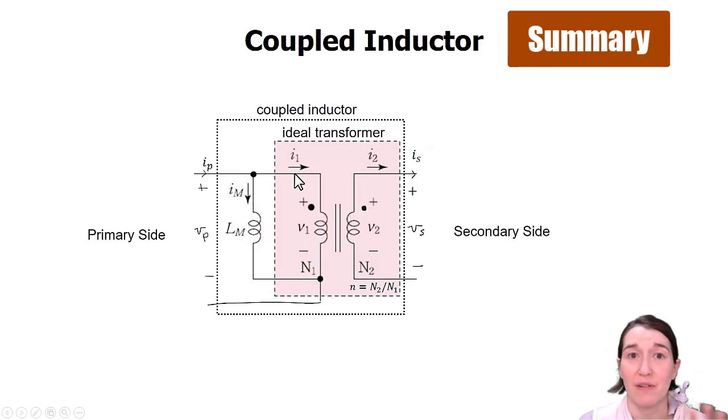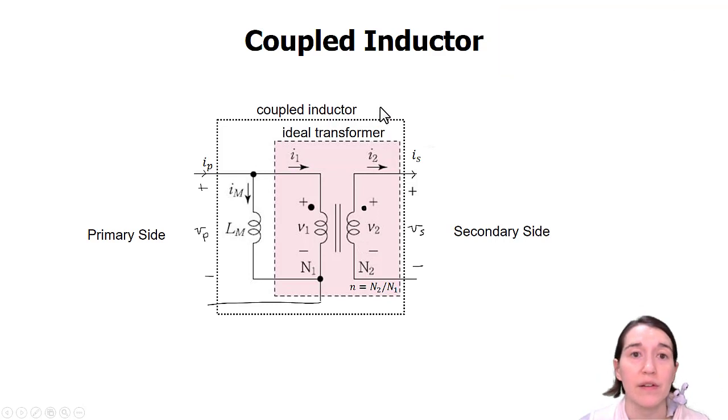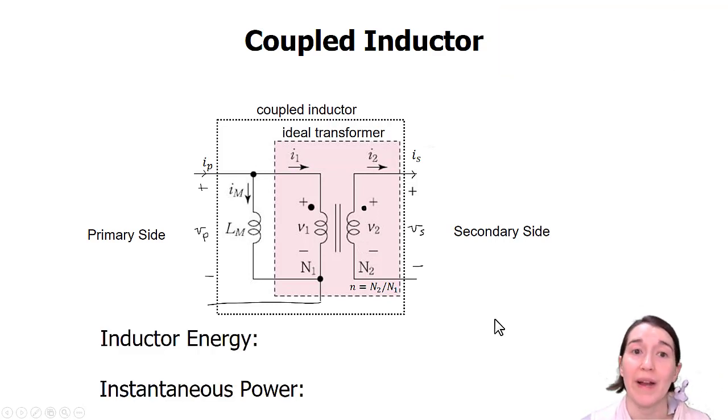So this is just defining and showing the diagram for the coupled inductor. It's an ideal transformer with a magnetizing inductance. Because of that inductance, it will store energy. And remember that it's going to be one half Li squared. So if there's current flowing through that inductor, there's energy stored in the coupled inductor. And because of this storage element, the instantaneous power on the primary and secondary may not be the same. So the input and output power may not be the same at one instant. The coupled inductor is used in converters like the flyback converter.